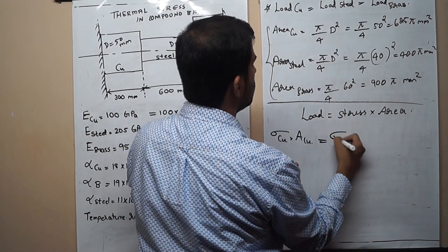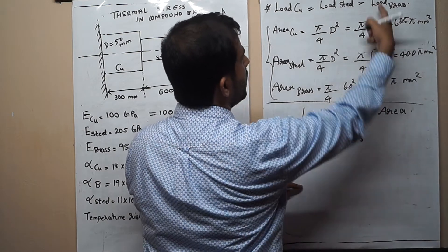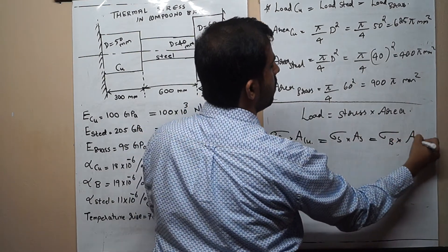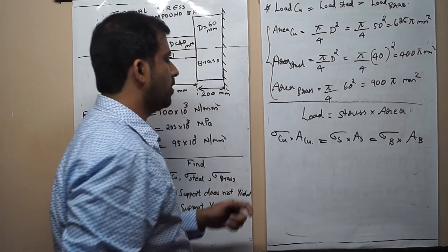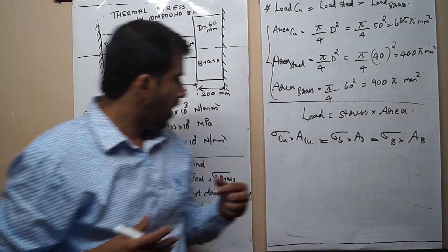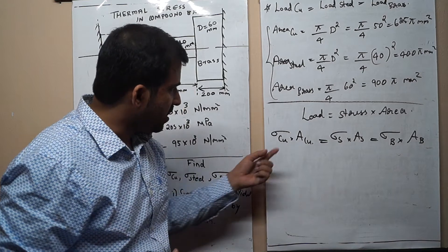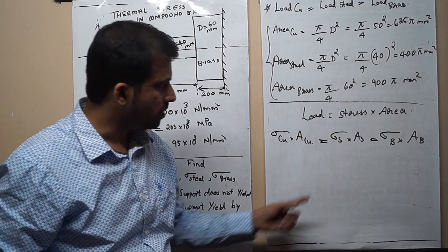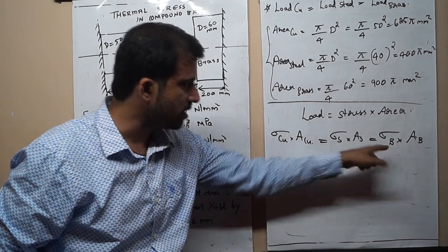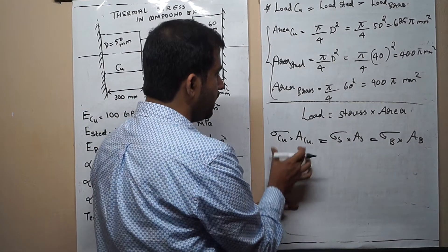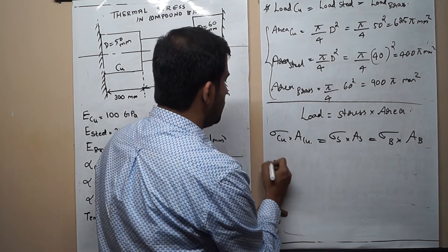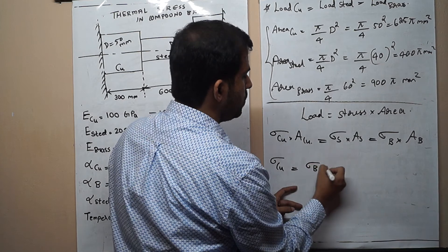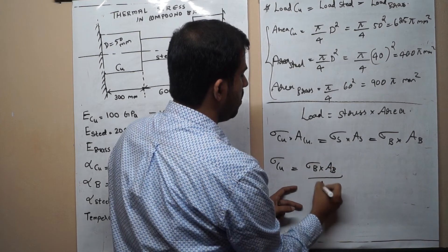So: load on steel = σ_steel × A_steel, and load on brass = σ_brass × A_brass. I want to express σ_copper and σ_steel in terms of σ_brass. Equating load on copper and load on brass: σ_copper = σ_brass × (A_brass / A_copper) = σ_brass × (900π / 625π).